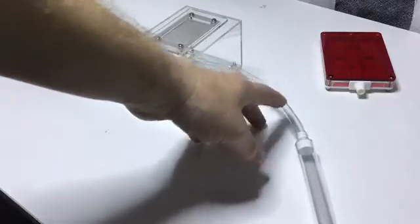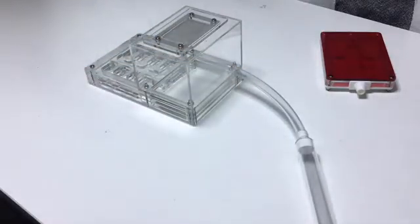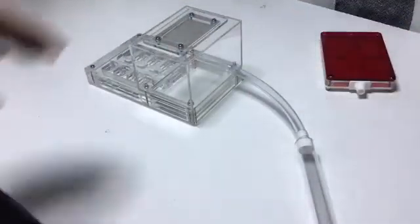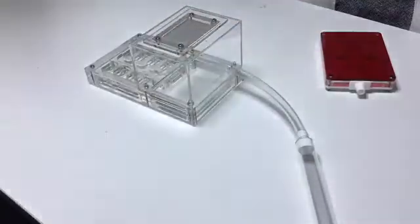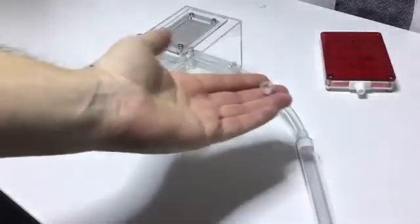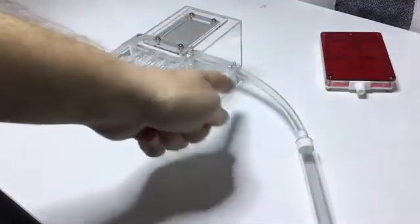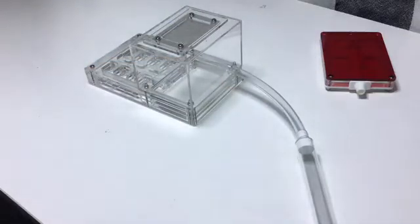We call this the crystal clear formicarium tubing. We use that for all of these formicarium. And you've got a little plug, which is just that. So you just pull the plug out and pop your tubing in and your ants are ready to go.